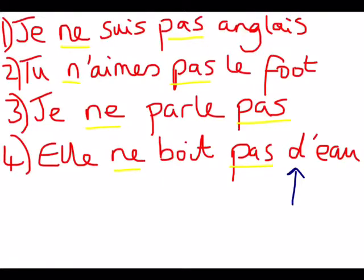OK, so here are our answers. Hopefully you found these. We have 'Je ne suis pas anglais'. 'Tu n'aimes pas le foot' — and in this case we got rid of the E and replaced it with an apostrophe because of the A. 'Je ne parle pas'. And 'elle ne boit pas d'eau'.